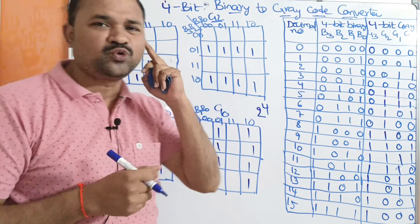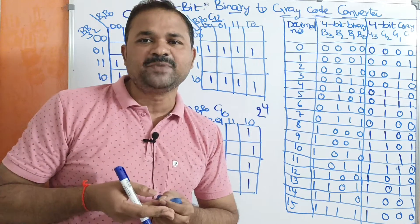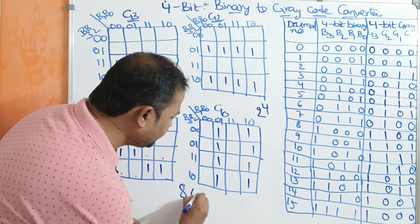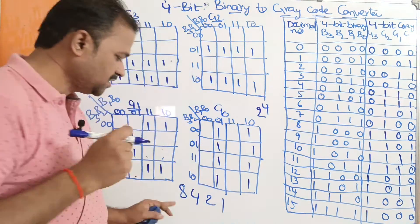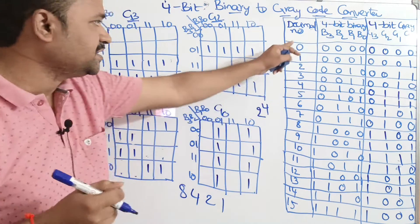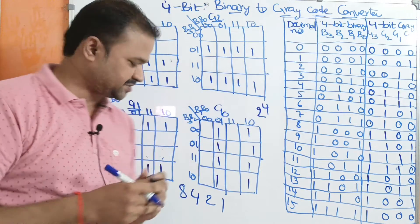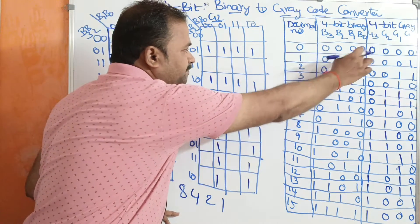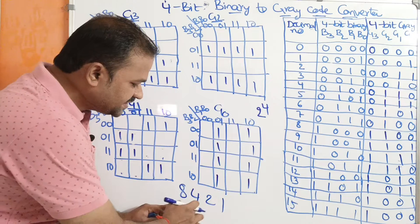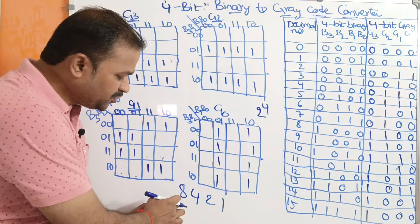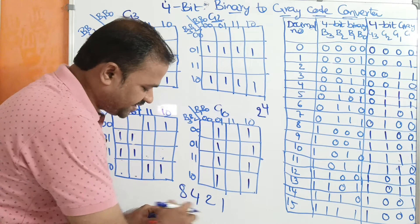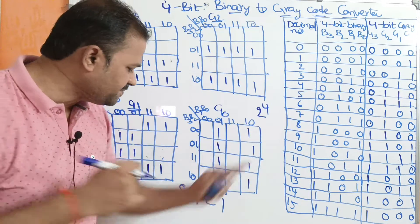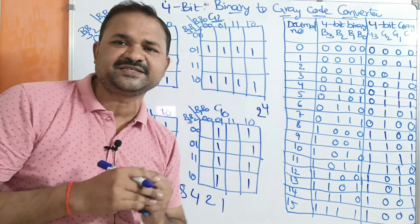We know how to represent a decimal number in binary notation. We simply use the 8421 notation. So how can we represent 0? That is all 0s. 1 means 0001. 2 means 0010. 3 is obtained by adding 2 and 1, so 3 means 0011. Likewise we can represent any number.